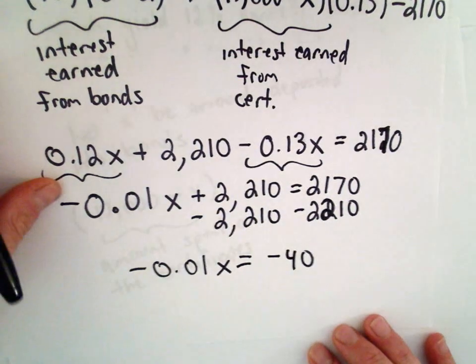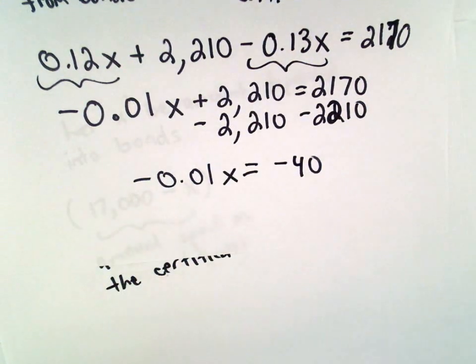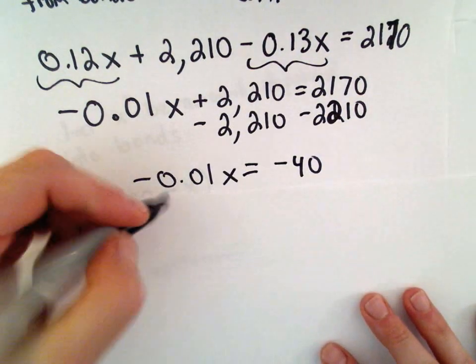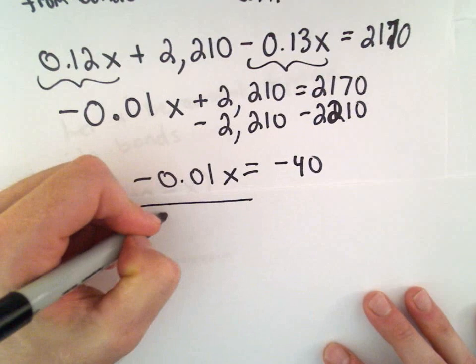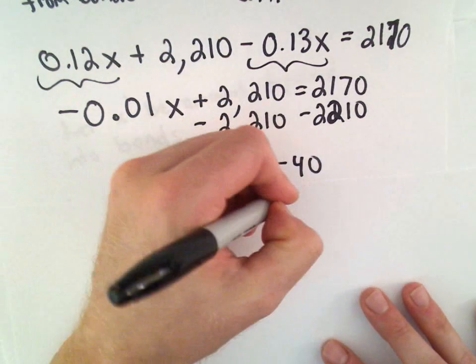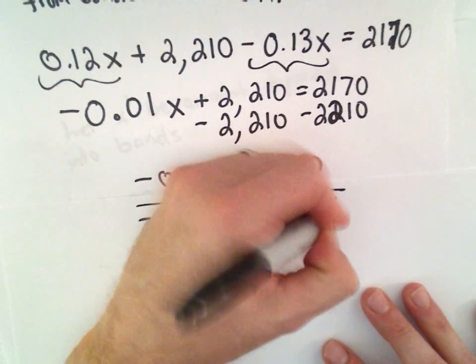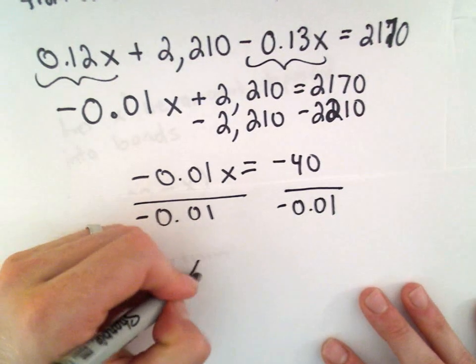Now, the last thing we'll need to do is just divide both sides by negative 0.01. On the left side, we'll be left with X.